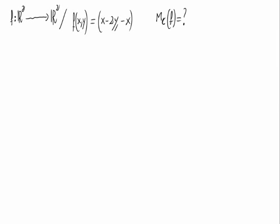We have the linear map from the space of R square to R square and its expression is f of x and y equals x minus 2y, minus x. We are asked to calculate the matrix of f from the canonical basis of R square.